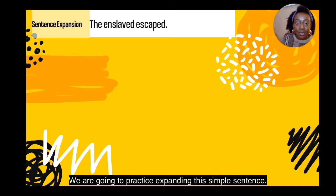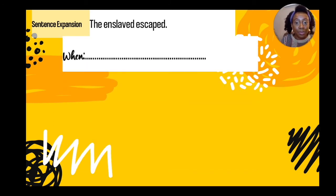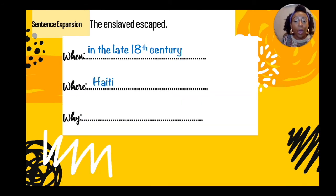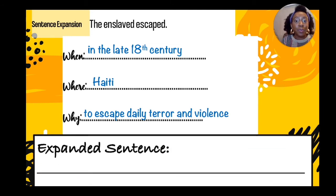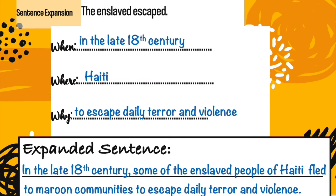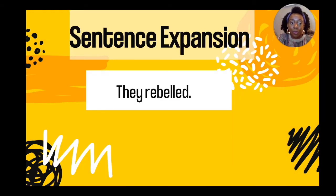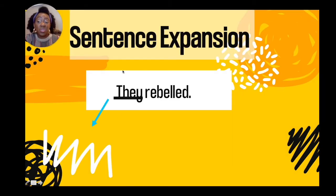How can we do that? We need to think about the when — in the late 18th century. Where — Haiti. Why — to escape daily terror and violence. Let's put them together. We want to start with the when first to give our sentence context: 'In the late 18th century, some of the enslaved people of Haiti fled to maroon communities to escape daily terror and violence.'